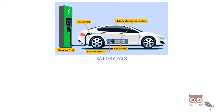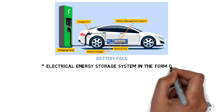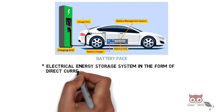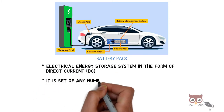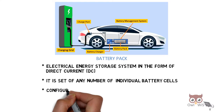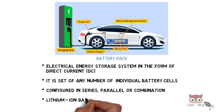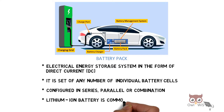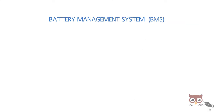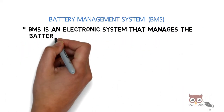The battery pack, shown alongside the battery management system, is an electrical energy storage system in the form of direct current. A battery pack is a set of individual battery cells configured in series, parallel, or a combination. The commonly used type is the lithium-ion battery.